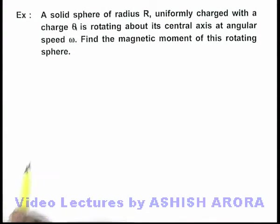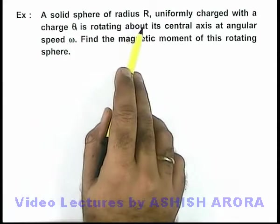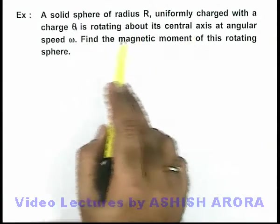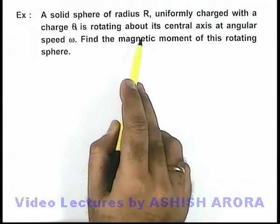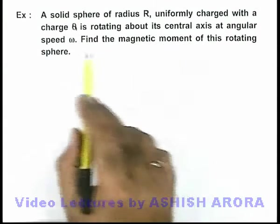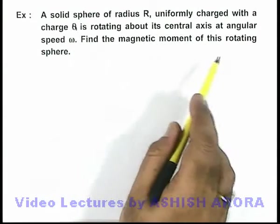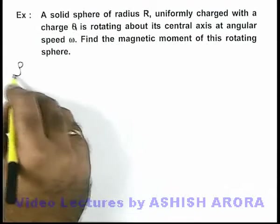In this example we are given that a solid sphere of radius R, which is uniformly charged with a charge Q is rotating about its central axis at angular speed omega. And we are required to find the magnetic moment of this rotating sphere.